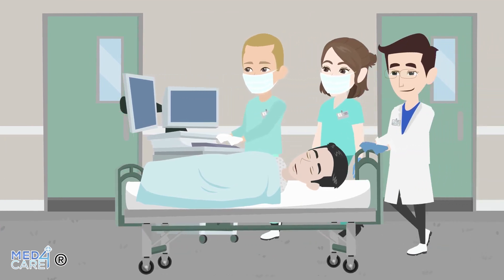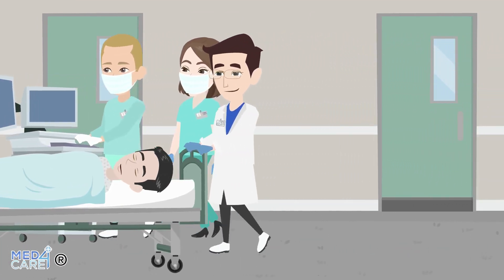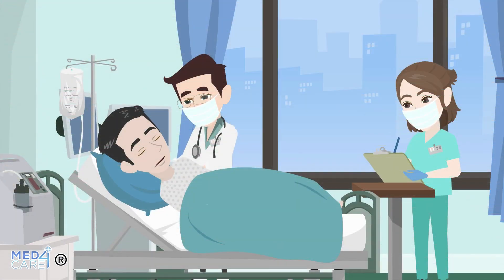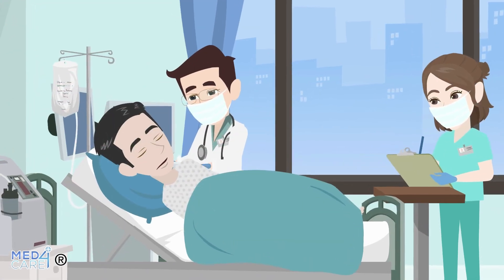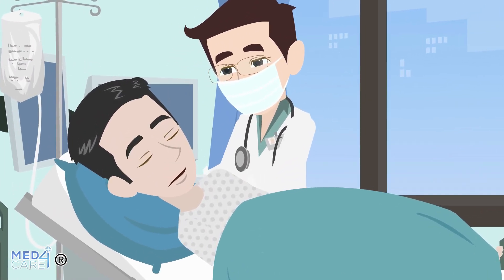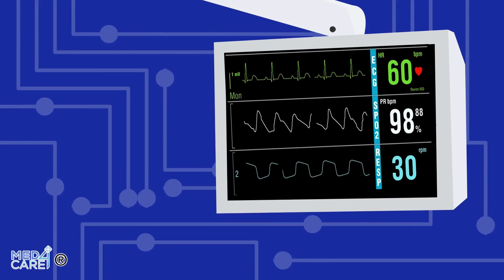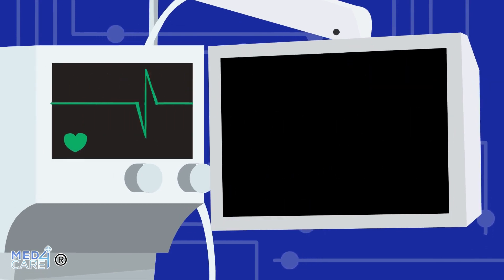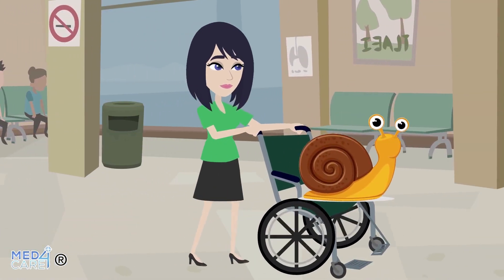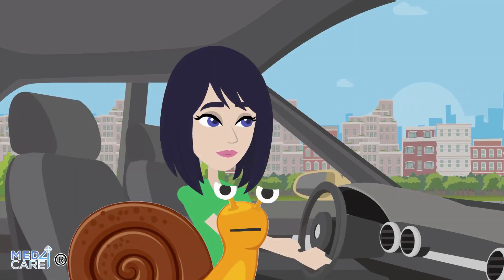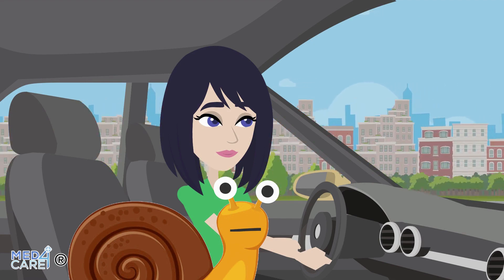Once the procedure has been performed, the patient must gradually recover their state of consciousness. Generally a recovery room is set up, while in other cases the patient recovers directly in the operating room. It is the precise duty of the anesthesiologist to wait for the complete recovery of the patient, constantly monitoring vital parameters including heart rate, blood pressure, and respiratory rate. The patient must be accompanied home by a family member or acquaintance, as side effects such as drowsiness and slow reflexes can last throughout the day.